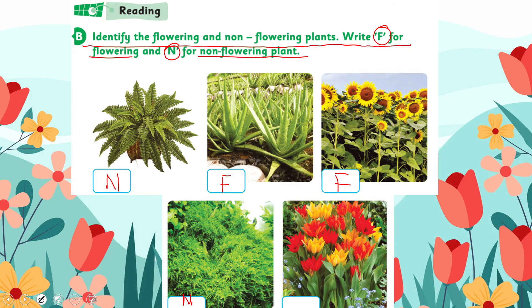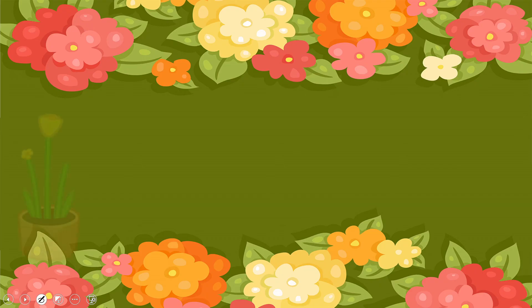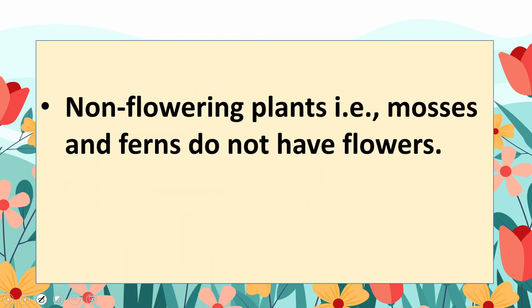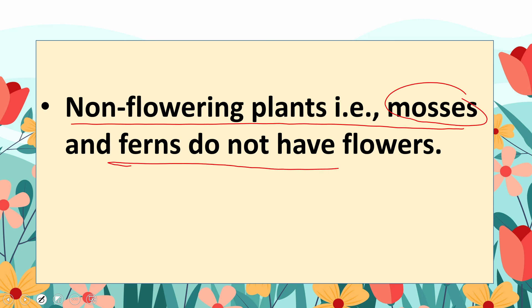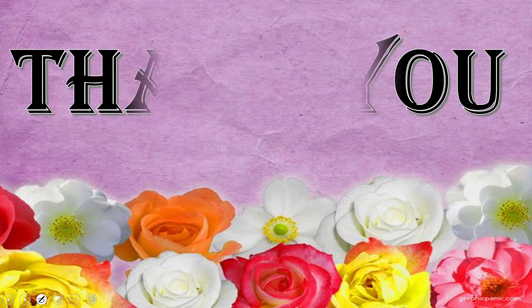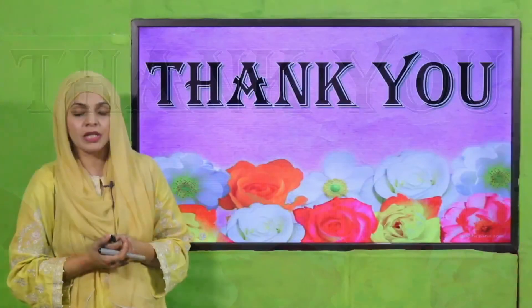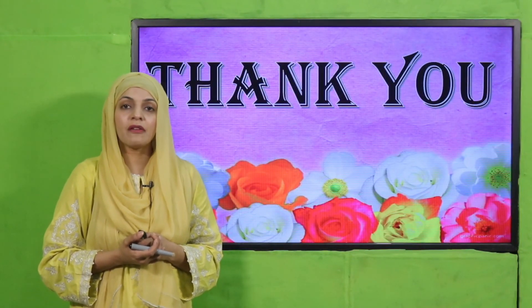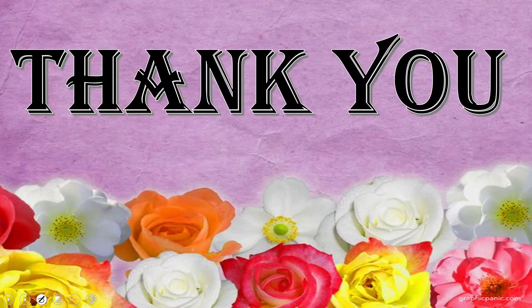Tulips are flowering plants — write F. This is how you will complete the homework. In today's lecture we learned that non-flowering plants are mosses and ferns, which do not have flowers. Flowering plants are jasmine and marigold, which have flowers on them. I hope you enjoyed today's activity — please do perform it. Take care of yourself. Thank you so much, and Allah Hafiz.